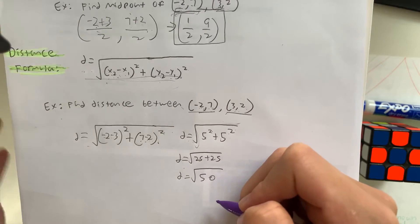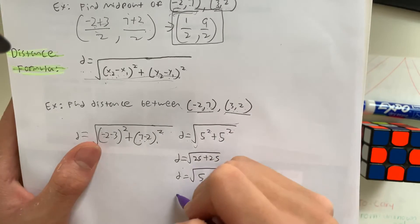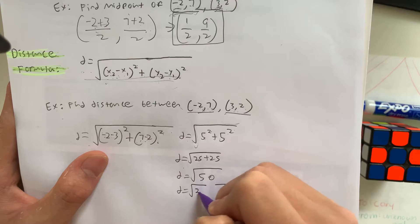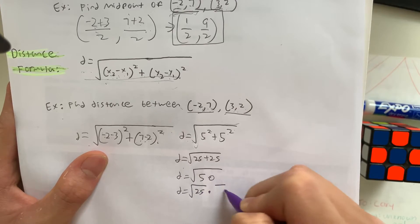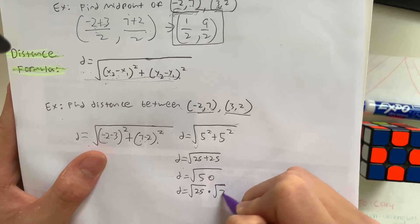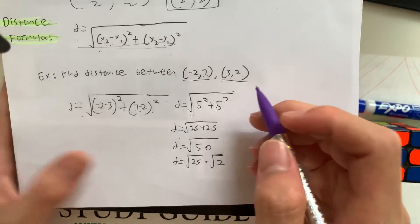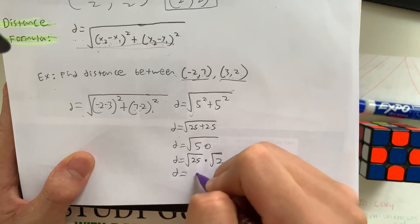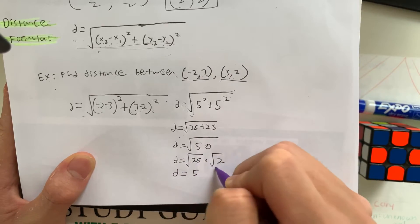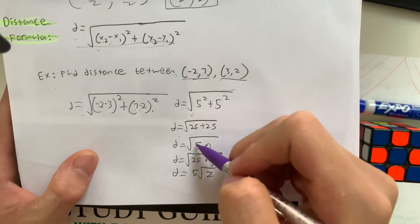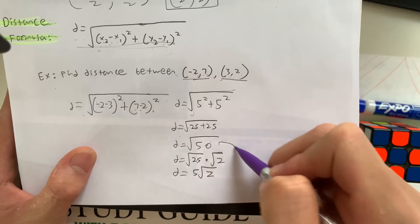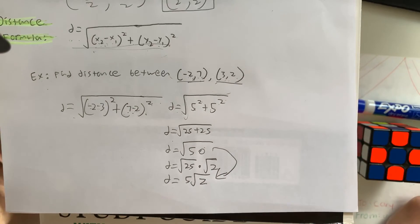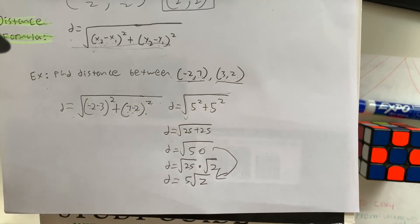The square root of 50 can be simplified into the square root of 25 times 2, meaning our final distance is equal to 5 root 2. If you guys want to learn how to simplify radicals like that, I'm going to make a video soon, so check that out.